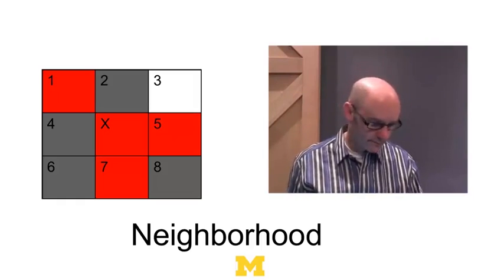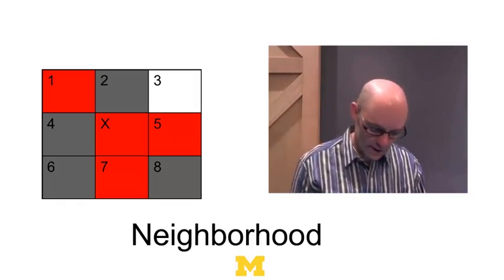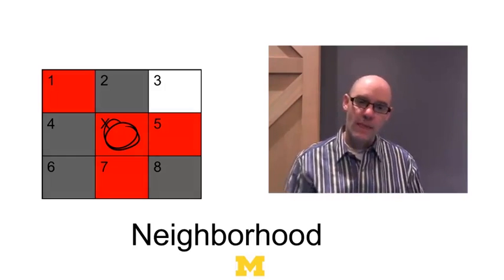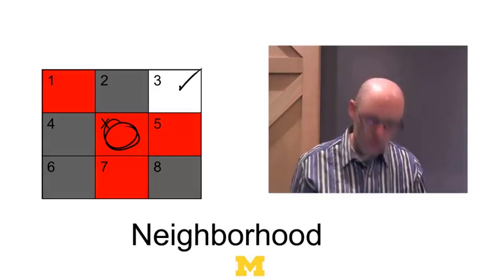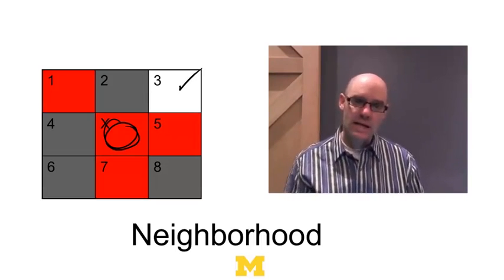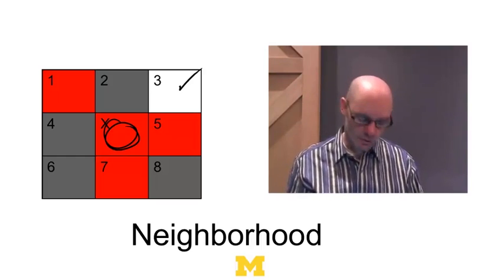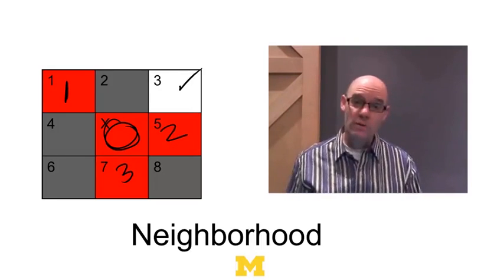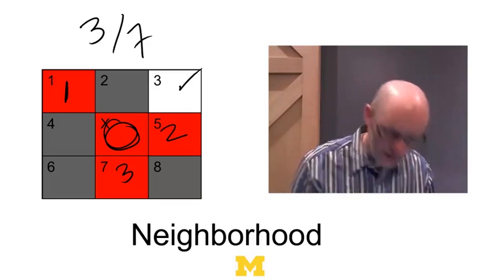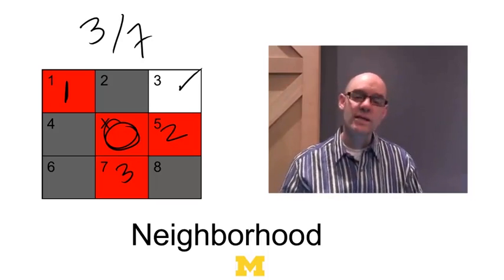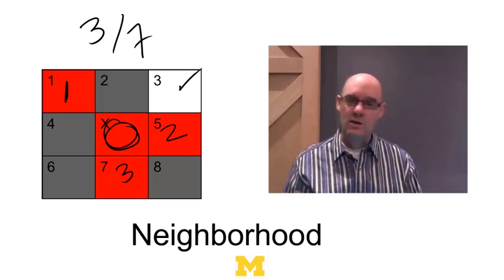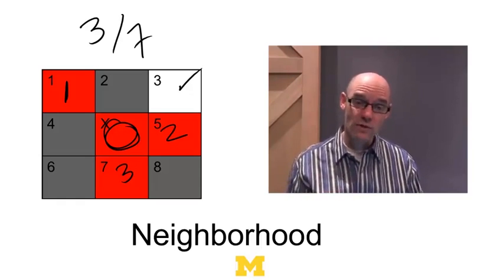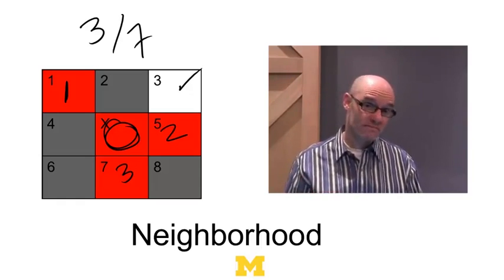A person living at position X has eight neighbors, one through eight. One of those spots might be blank, so she has seven neighbors. Let red represent rich people and gray represent poor people. This rich person has three neighbors who are like her and four who aren't — so three out of seven neighbors are the same as her. She has to decide: is three out of seven enough? Should I stay or should I move?